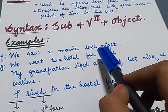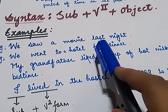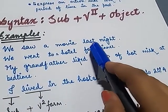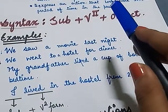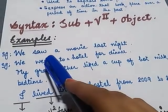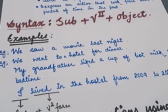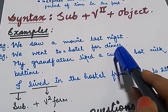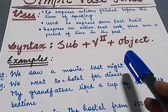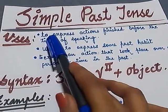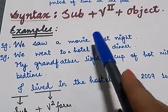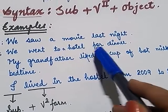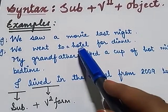I have discussed this before also, when I had discussed the difference between simple past and present perfect — that whenever you will get any time expression denoting past time, then you will use simple past tense. This is the first use. Here these two are the examples. These actions have finished before the time of speaking, so we will use simple past tense.